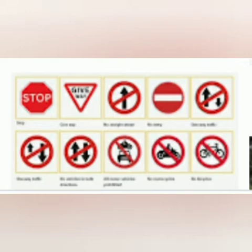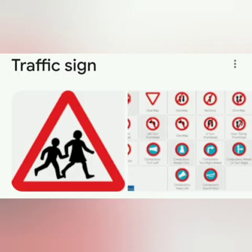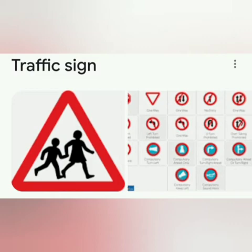Here we can easily understand what we can do on the roadside. My dear students, these symbols give the information for you. We should understand these types of traffic signs. You see this picture — it gives the information about people who can cross the road. This is a very important zone also. Zebra crossings near the school use these types of signs.